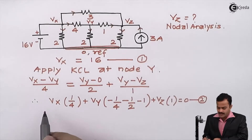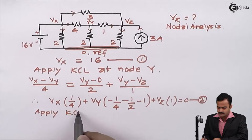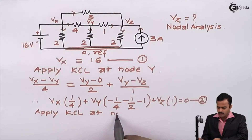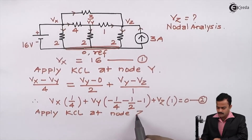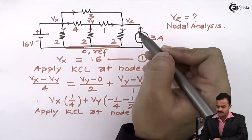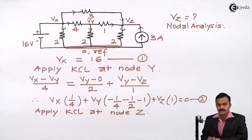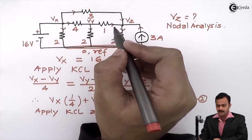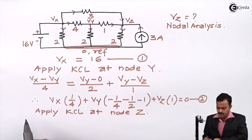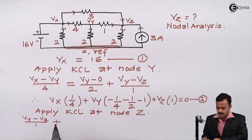Similarly, I can apply KCL at node Z. At node Z, 4 branches are connected: 3 incoming and 1 outgoing. For the incoming currents — for the 1 ohm branch it is Vy minus Vz divided by 1.